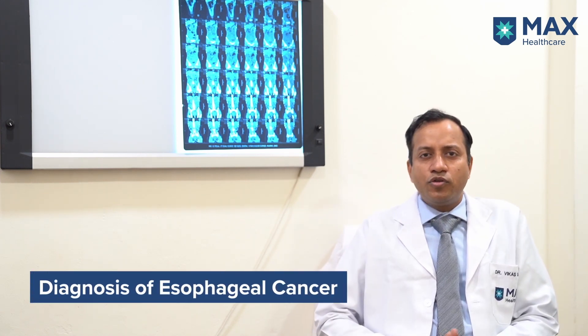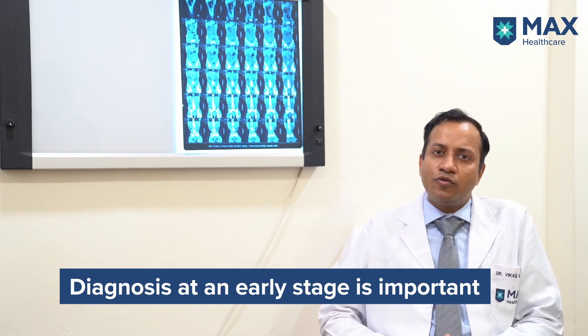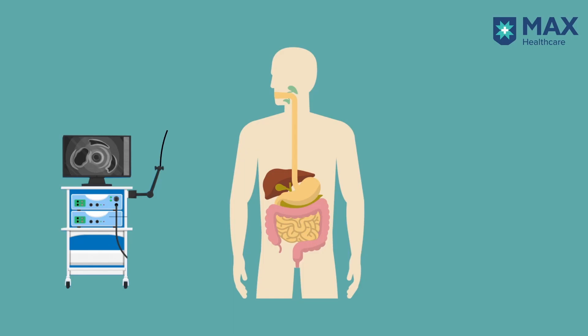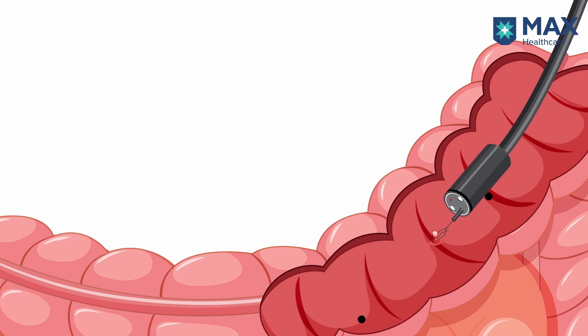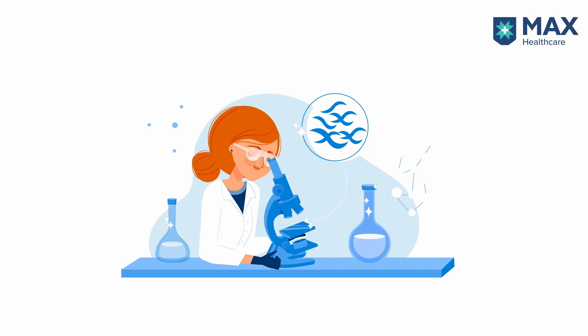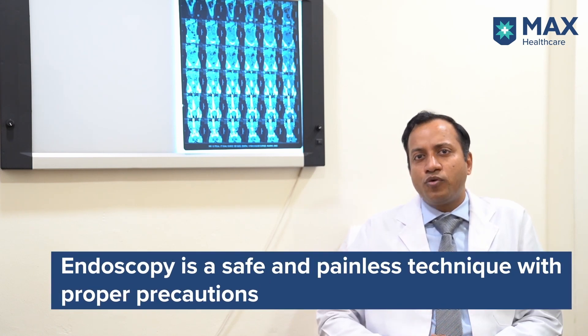The next issue is how esophageal cancer is diagnosed. It is important that this cancer is diagnosed in its initial stage so that treatment can be done in a better way. Firstly, we perform endoscopy. Esophageal cancer patients have ulcers which we can see through endoscopy. We take a biopsy of this ulcer, which is a very safe technique and does not cause complications at all. The biopsy is later examined under the microscope in the laboratory to confirm the esophageal cancer diagnosis. Patients need not fear endoscopy — if proper precautions are taken, it is a very safe and painless technique.